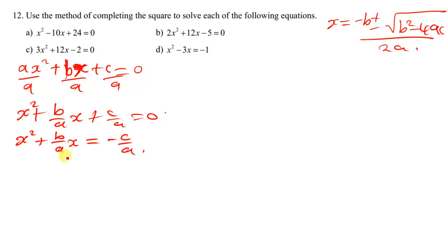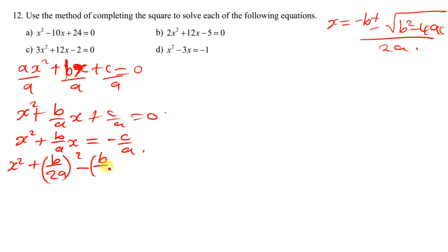Now we can complete the square of these two terms by finding half of this expression. Half of b over a is b over 2a. We square this and then subtract the same b over 2a squared — so this plus this minus this gives us zero, meaning we are just adding nothing to the expression.